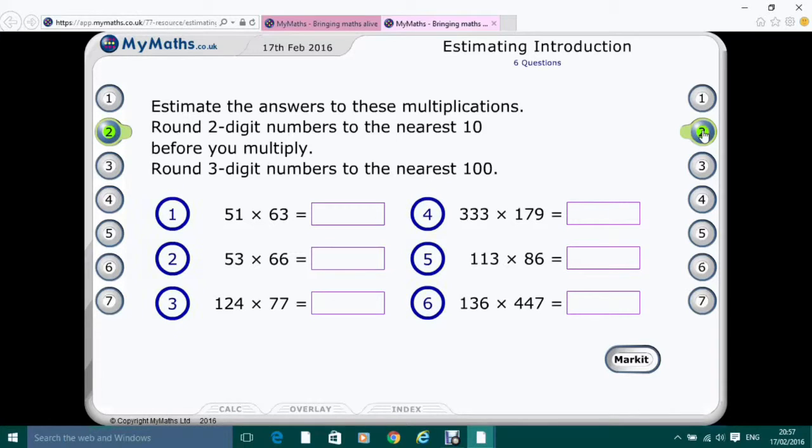And again, there are lots of questions to practice on these areas. So we can see the quick way. For example, 51 times 63: 50 times 60 is 3000, add on your two zeros.